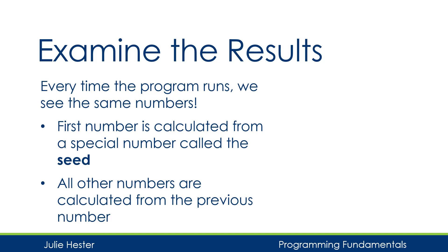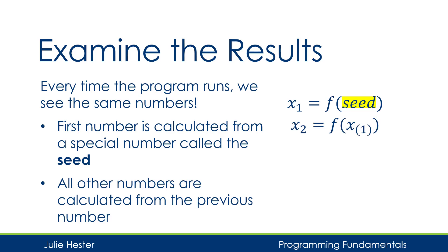In mathematical terms it looks something like this. The very first number that we get from rand uses a seed value as input to a function. There's a complex mathematical formula for generating a random number — we're not so concerned about that — but that seed value is going to influence the number that we get the first time.